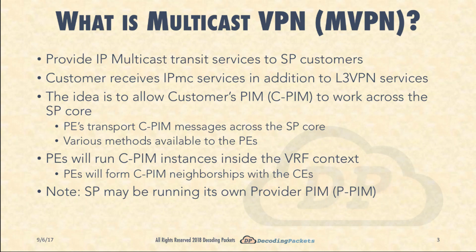Most often with mVPN, we are going to take the customer's PIM — Protocol Independent Multicast — and from this point on we will call it CPIM. CPIM will refer to the PIM running at the customer sites. If you have three customer sites all running PIM, then these are all instances of CPIM, and the multicast VPN is going to make CPIM work across the SP core.